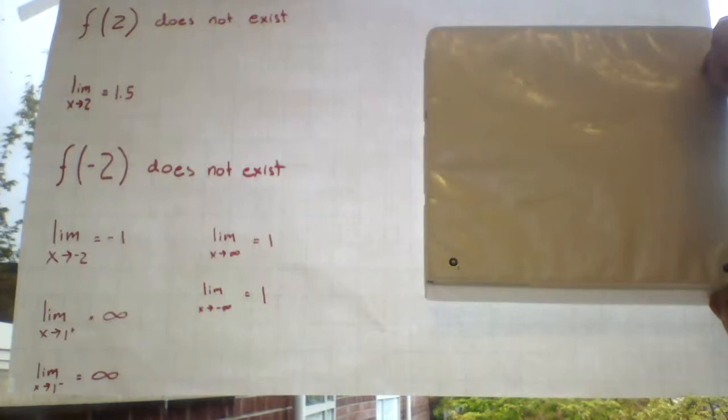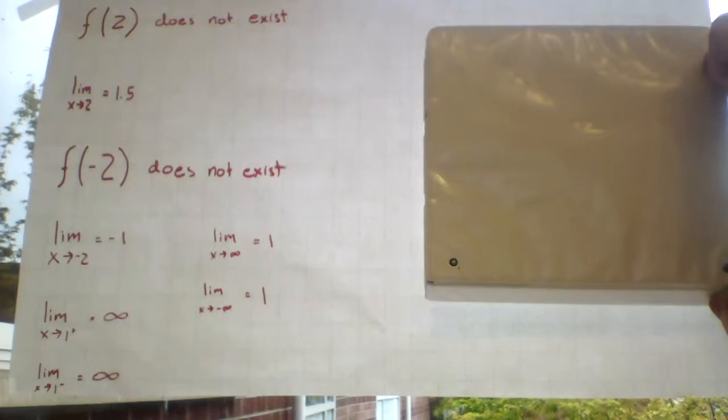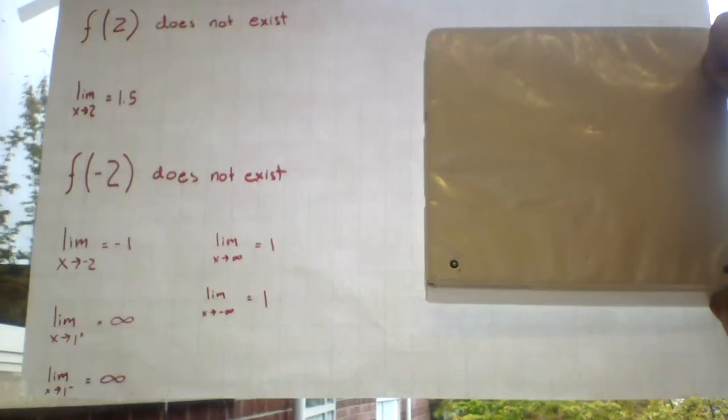The limit as x approaches negative 2 also doesn't exist. However, the limit as x approaches 2 equals negative 1. My bad. The limit as x approaches negative 2 equals negative 1.